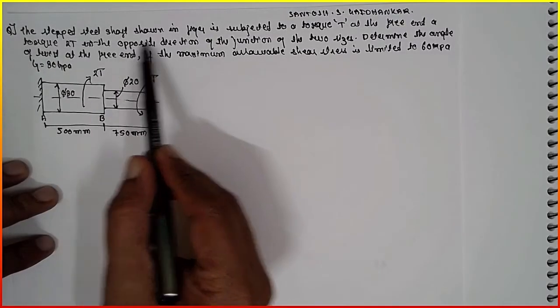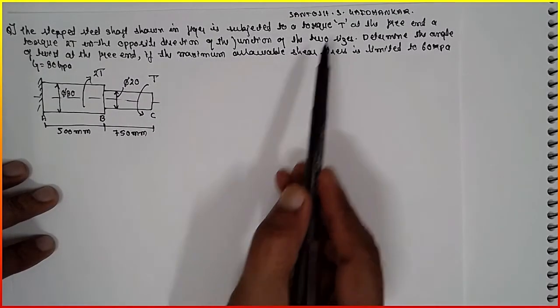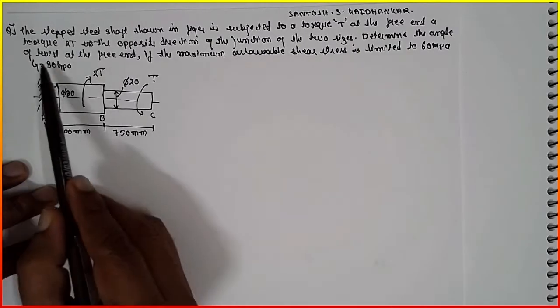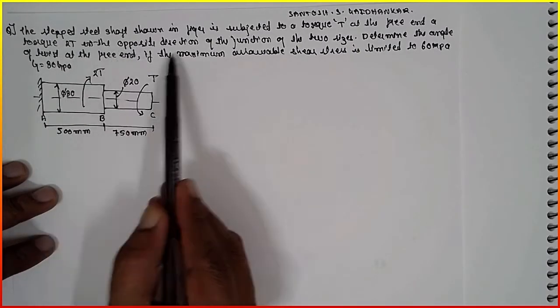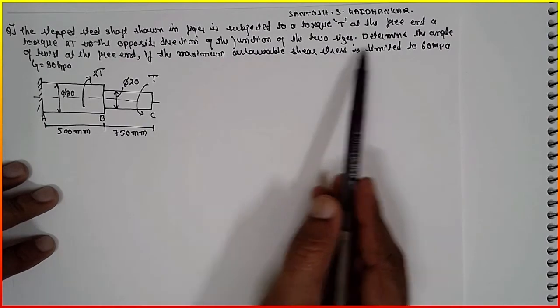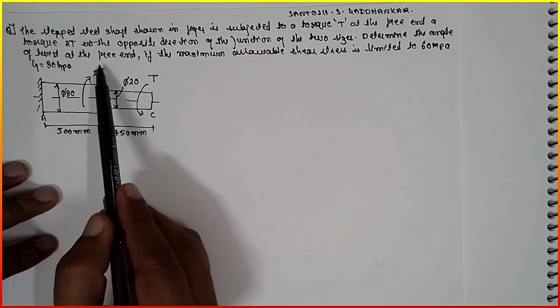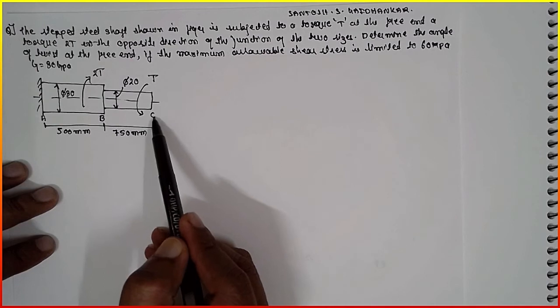A stepped steel shaft shown in the figure is subjected to a torque T at the free end, and torque 2T in the opposite direction at the junction of the two sides. Determine the angle of twist at the free end. We have to find out theta C here.